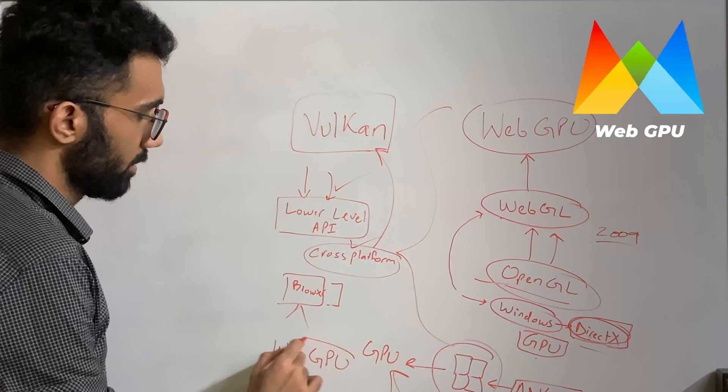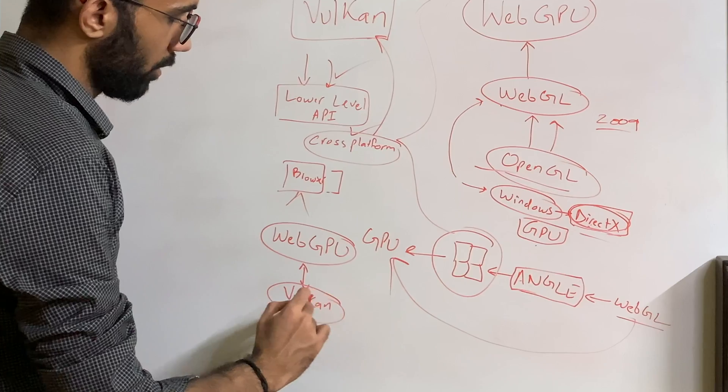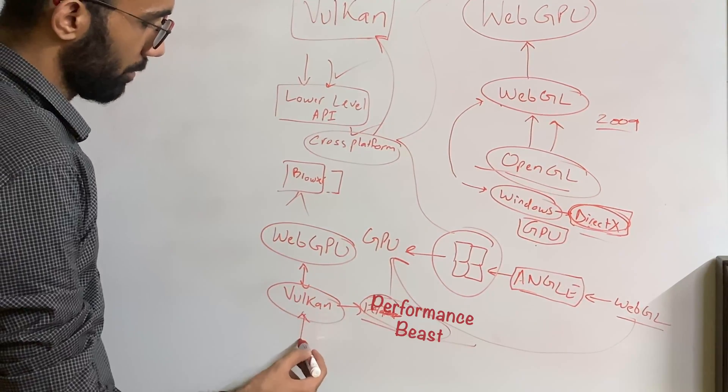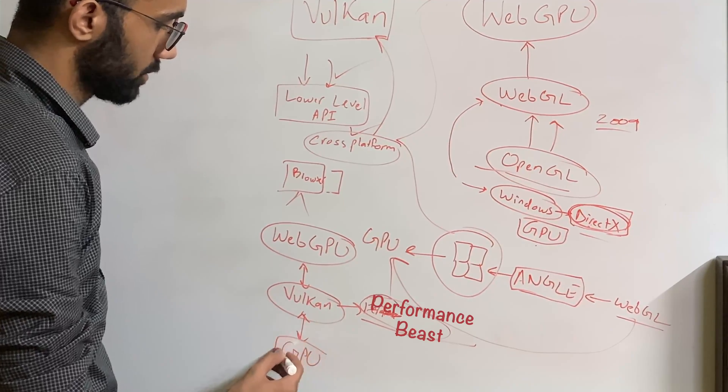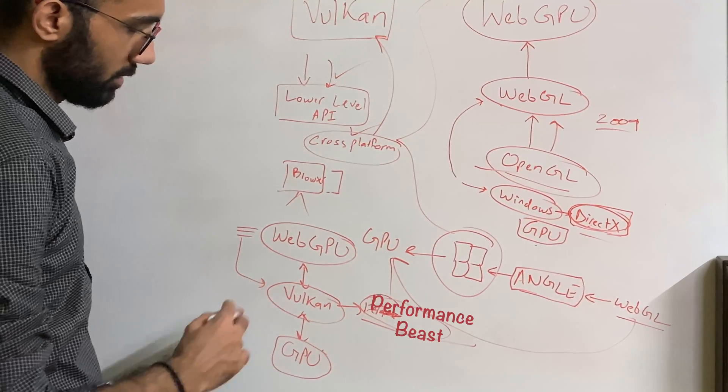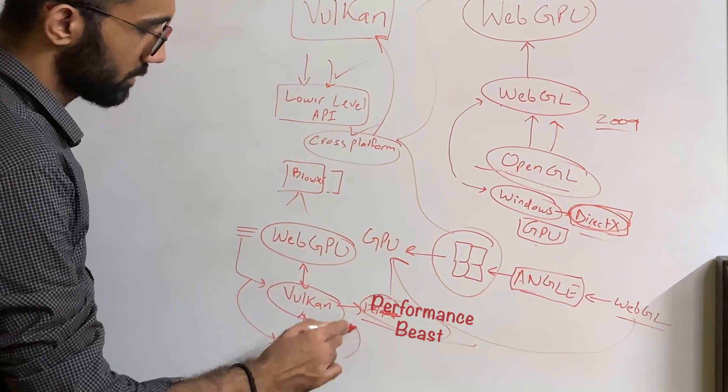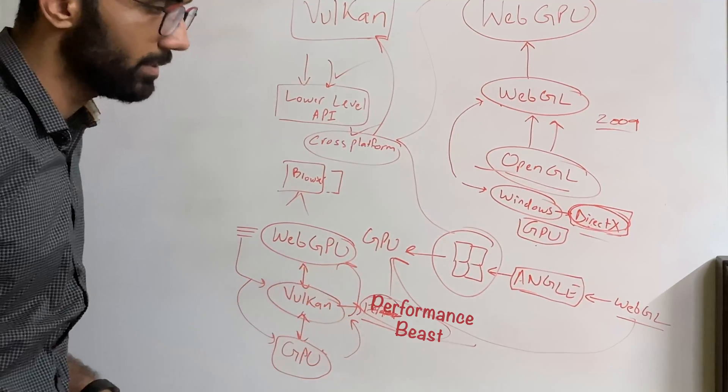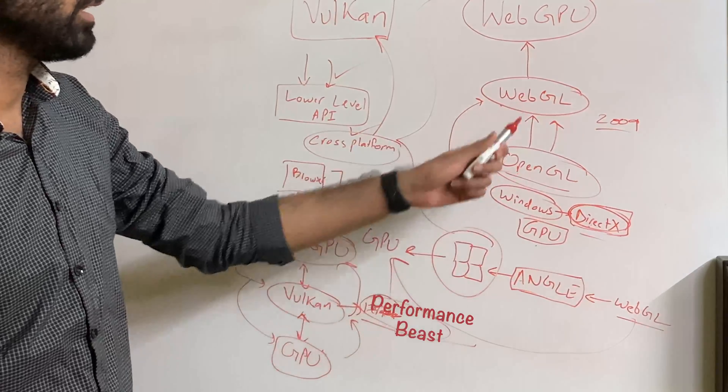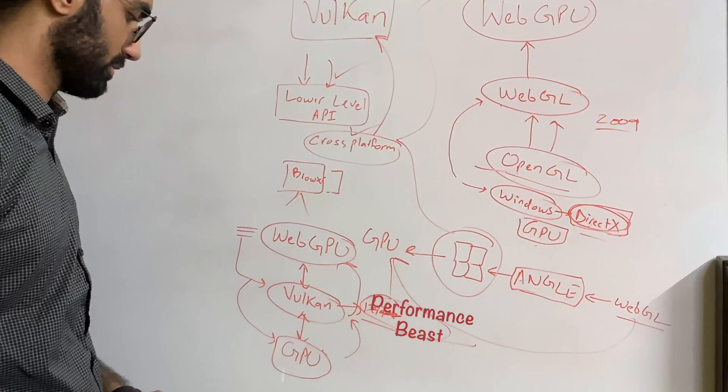So web GPU is a new standard which sits on top of Vulkan and this boy right here is a performance beast. Vulkan now communicates with your GPU at a much lower level. So you write some code for the web, your browser sends it to the Vulkan APIs, calls the Vulkan APIs, it communicates with the GPU, gets back the results and this is extremely fast. This is super fast compared to what you were doing with WebGL and OpenGL, even OpenGL in a lot of cases.